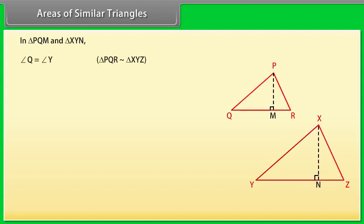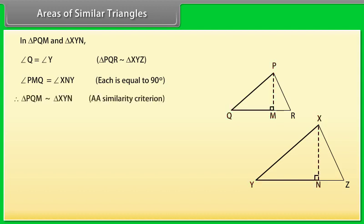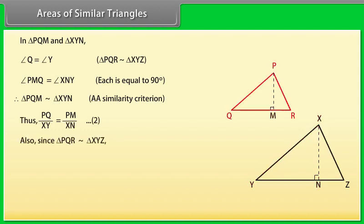In triangles PQM and XYN: angle Q equals angle Y (since triangle PQR is similar to triangle XYZ), angle PQM equals angle XYN, and each of angles PMQ and XNY equals 90 degrees. Therefore triangle PQM is similar to triangle XYN by the AA similarity criterion.